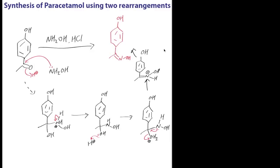You can see it's almost got the shape of paracetamol - we've got the acyl group in the form of an oxime now. This is when we come on to the second stage of the rearrangement synthesis, which is the Beckmann rearrangement.